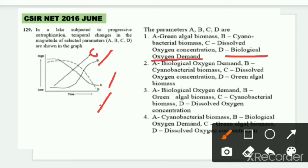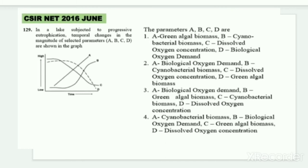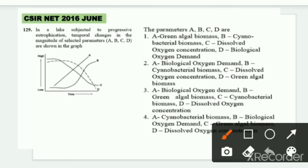The options tell us that the parameters are: A = green algal biomass, B = cyanobacterial biomass, C = dissolved oxygen concentration, and D = biological oxygen demand. We need to identify which parameter fits where in the graph. In the graph, A is progressively increasing, B is gradually increasing, while C and D are decreasing.